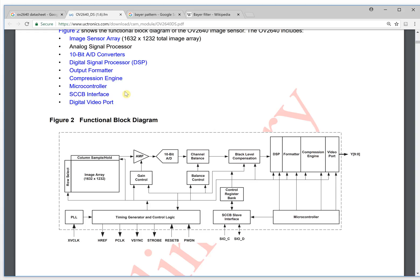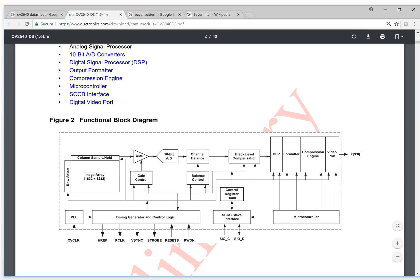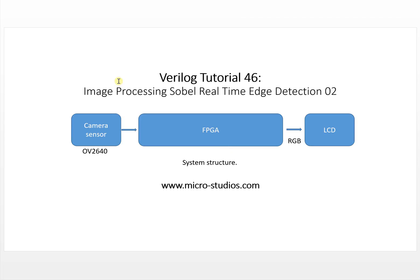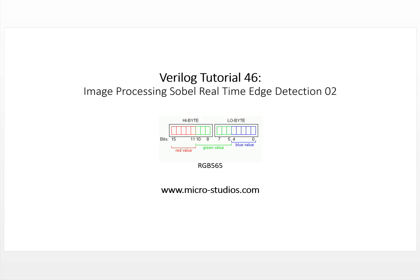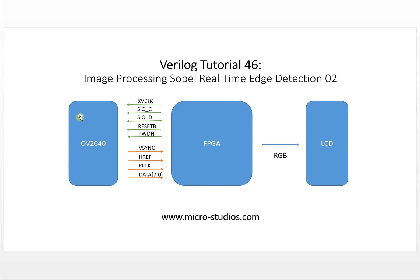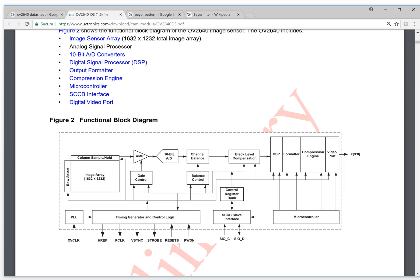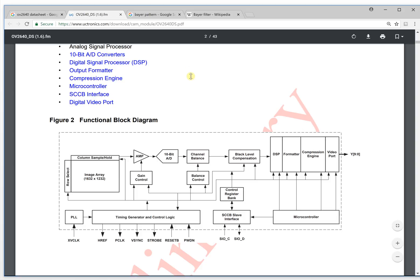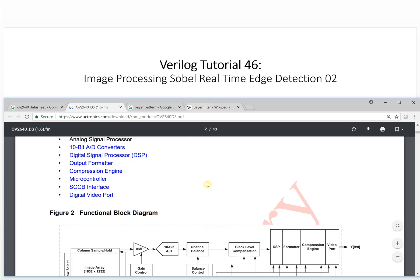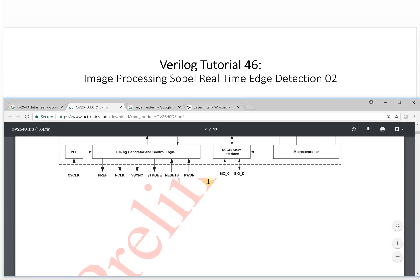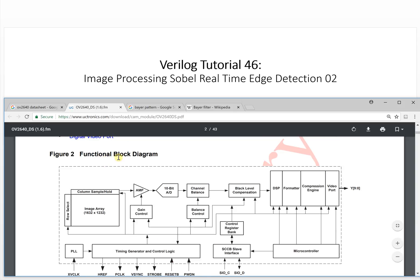The second thing: for the FPGA, we need to know the interface of the sensor. This is the camera sensor, and this is the FPGA. What controls the sensor is the control interface — let's take a look here. This is the functional block diagram.